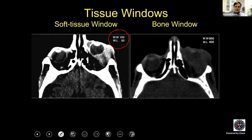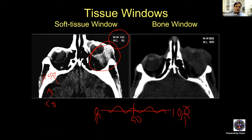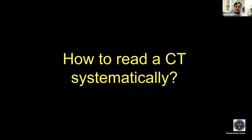For soft tissue window and bone window: if the window level is 50 and window width is 100, that means on either side of 50 — from 0 to 100 Hounsfield units — it has been imaged, with everything else in shades of gray. Zero would be jet black and 100 would be pearly white. For a bone window the spectrum would be much higher. That is the concept between window width and window level.